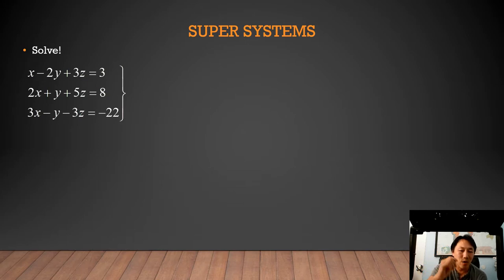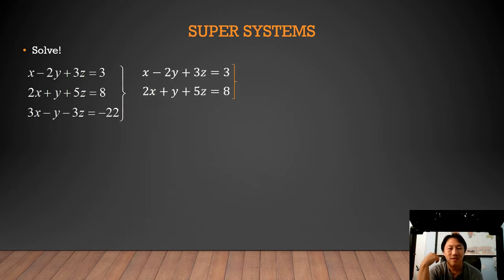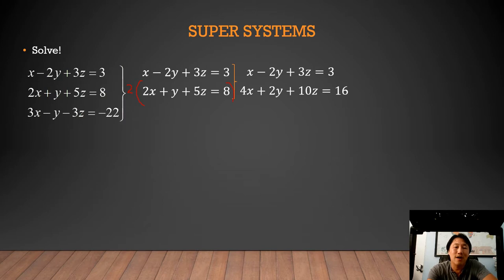I'm going to go ahead and take the top two equations and rewrite them. I'm going to eliminate the Y value. To eliminate the Y, I'm going to have to multiply this entire second equation by 2. There's the top equation, I haven't done anything to it, but the bottom equation I'm multiplying by 2. That gives me 4x plus 2y plus 10z equals 16.